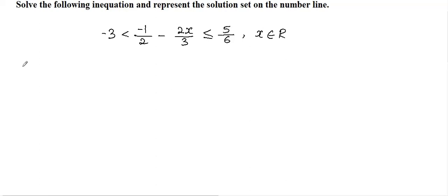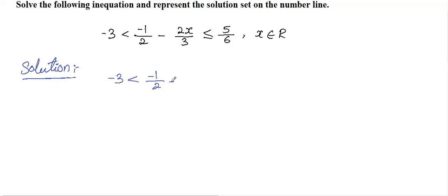Hi guys, welcome to the session. This is Prakash, math tutor. Let's solve the inequality question I've written on the whiteboard. We need to solve the inequality for X, write the solution set, and draw the number line as well. The given inequality is: minus three less than one-half minus two X over three, less than or equal to five-sixths.